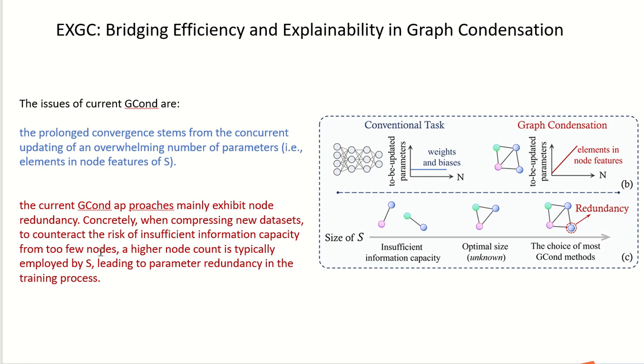Number two is the current Graph Condensation approaches mainly exhibit node redundancy. That is, when compressing new datasets, to counteract the risk of insufficient information capacity from too few nodes, a higher node count is typically employed by these graphs.